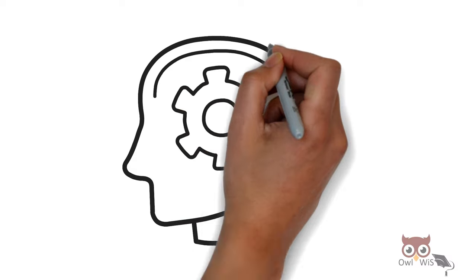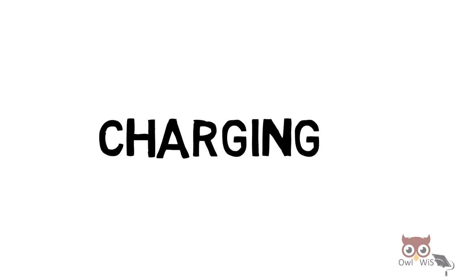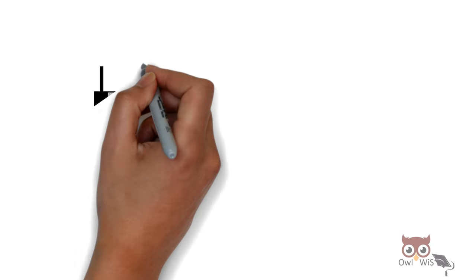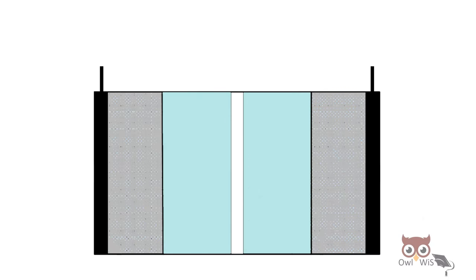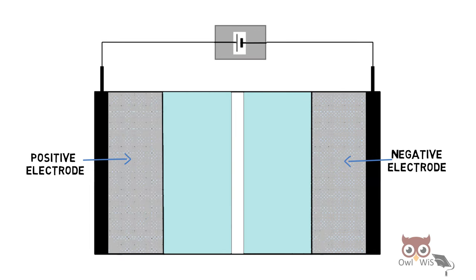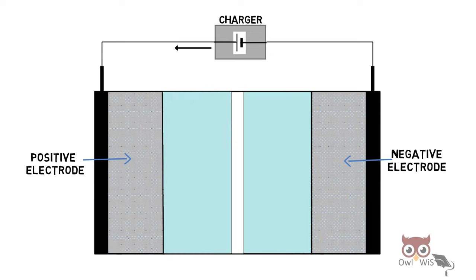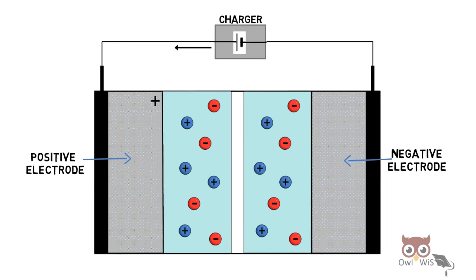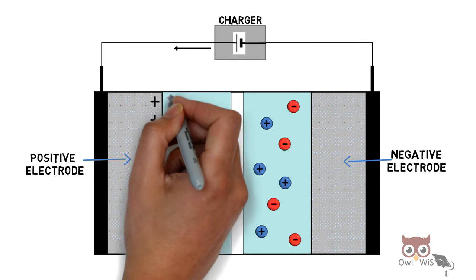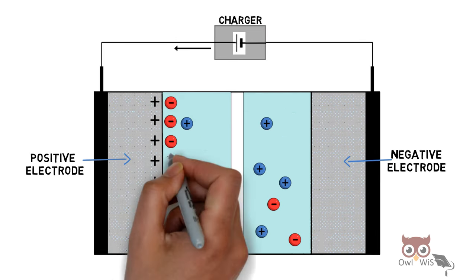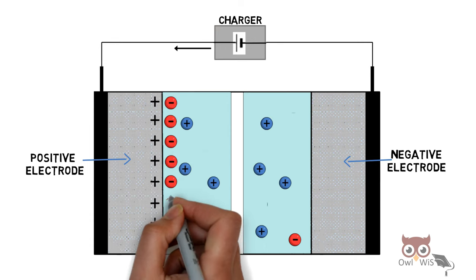Let us understand the working. During charging, a charger is connected across the electrodes and current starts to flow inside the supercapacitor. There are positive and negative ions present inside the electrolyte distributed randomly. When the charger starts to charge the positive electrode with positive charge, it attracts the negative ions from the electrolyte, forming a layer across it.